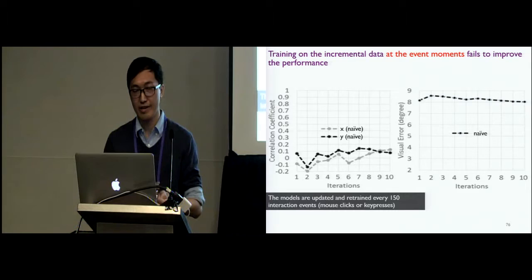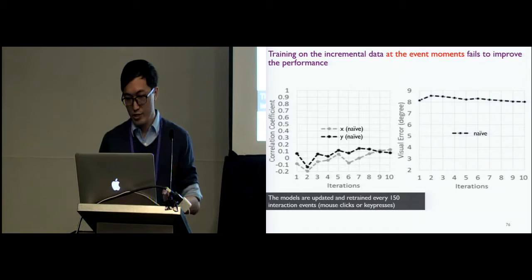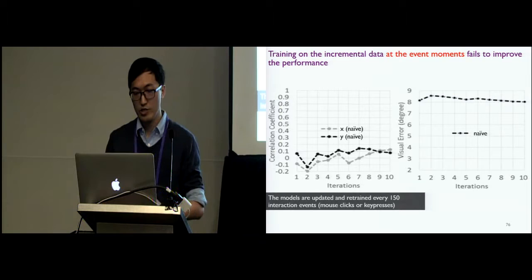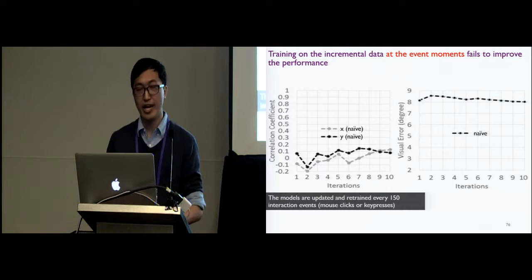The figures here on the left side shows the correlation coefficient between the ground truth and the predicted xy gaze coordinates. And the figure on the right side shows the visual error in degrees. From these results, we can conclude that the training on the data at the event moment, or meaning that the data extracted using the naive method, fails to improve the performance.